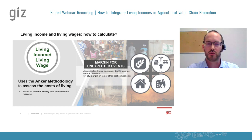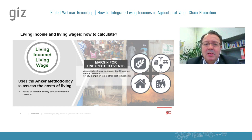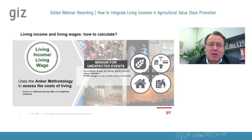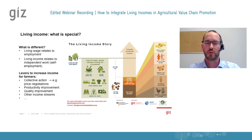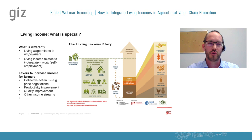What is so special about the living income concept and what is the difference to living wages? The main and core difference is really the target group. The living wage relates to employed people — they have a job and a salary. The living income relates rather to independent workers or families, farmers — it is this self-employment aspect.